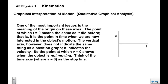One of the most important issues here is the meaning of the origin on these axes. We have velocity on the vertical axis and time on the horizontal axis. The point on the horizontal axis where t equals zero means the same thing as before — it's the point in time when we're interested in what the object is doing. The vertical axis, however, does not indicate the same thing as the position graph. It tells us what the velocity is at any time. The point where v equals zero shows that the object at that place on the graph is not moving.